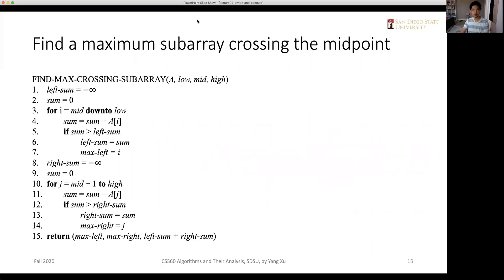So let's show the code here. Look at the inputs. We have A, the input array, the low starting index, mid, the midpoint, and high, the end index. So initially we define some variable called left sum, initialized to negative infinity. And the sum is also initialized to zero.